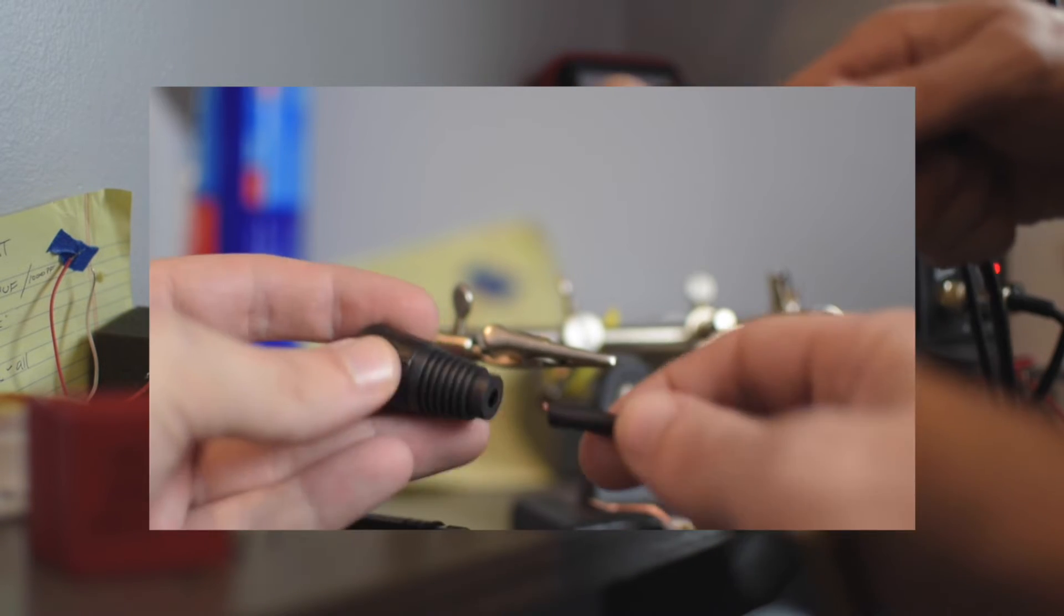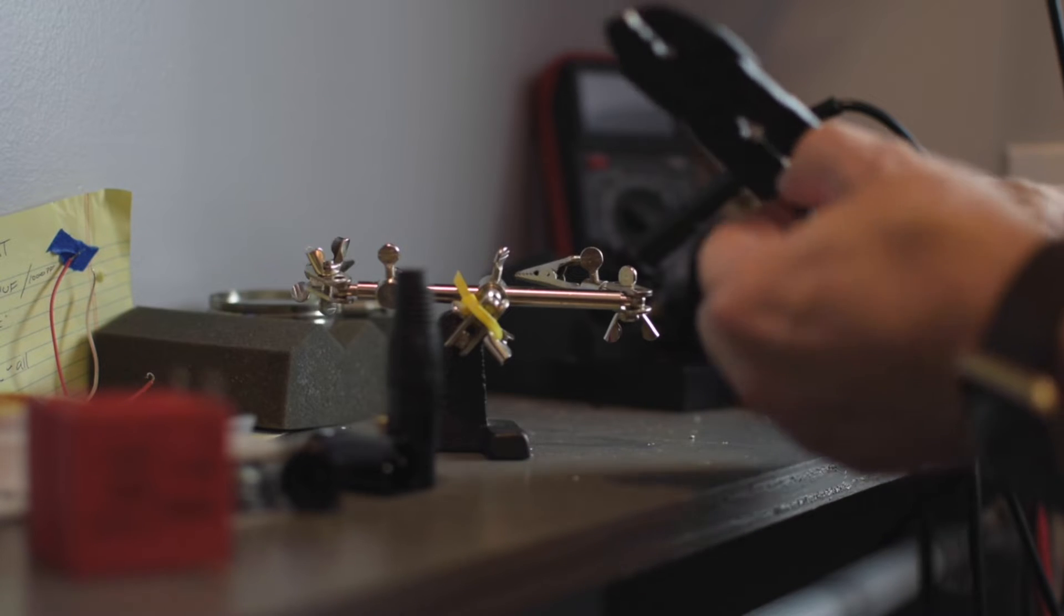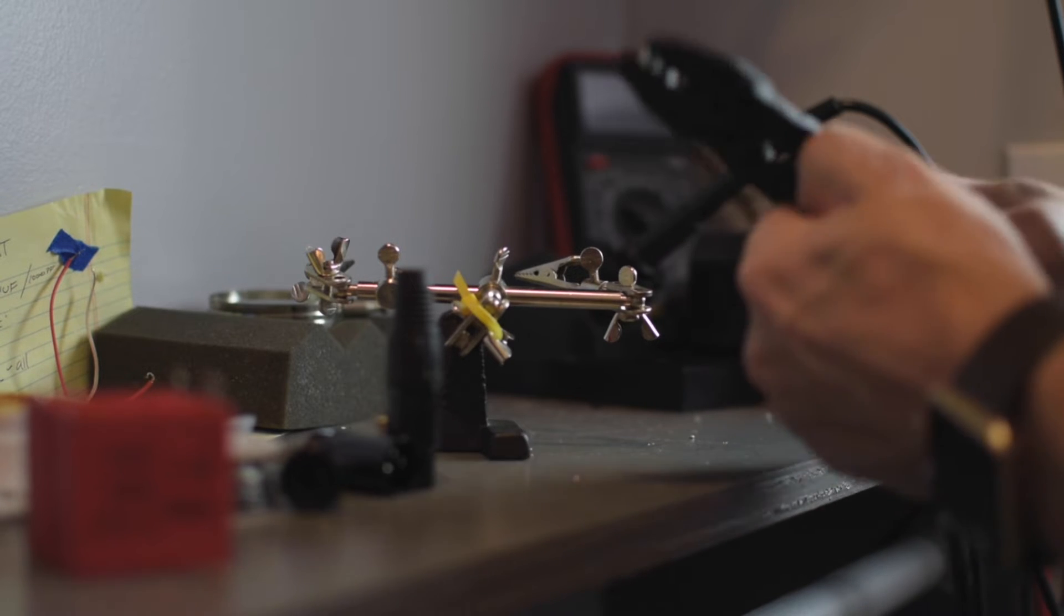You've got to put the connector on first. That's your first step. Because if you don't, it's going to be impossible to get this end on later. You're going to have to undo everything. Even before you strip it, as soon as you cut the end and it's good, put that connector on.